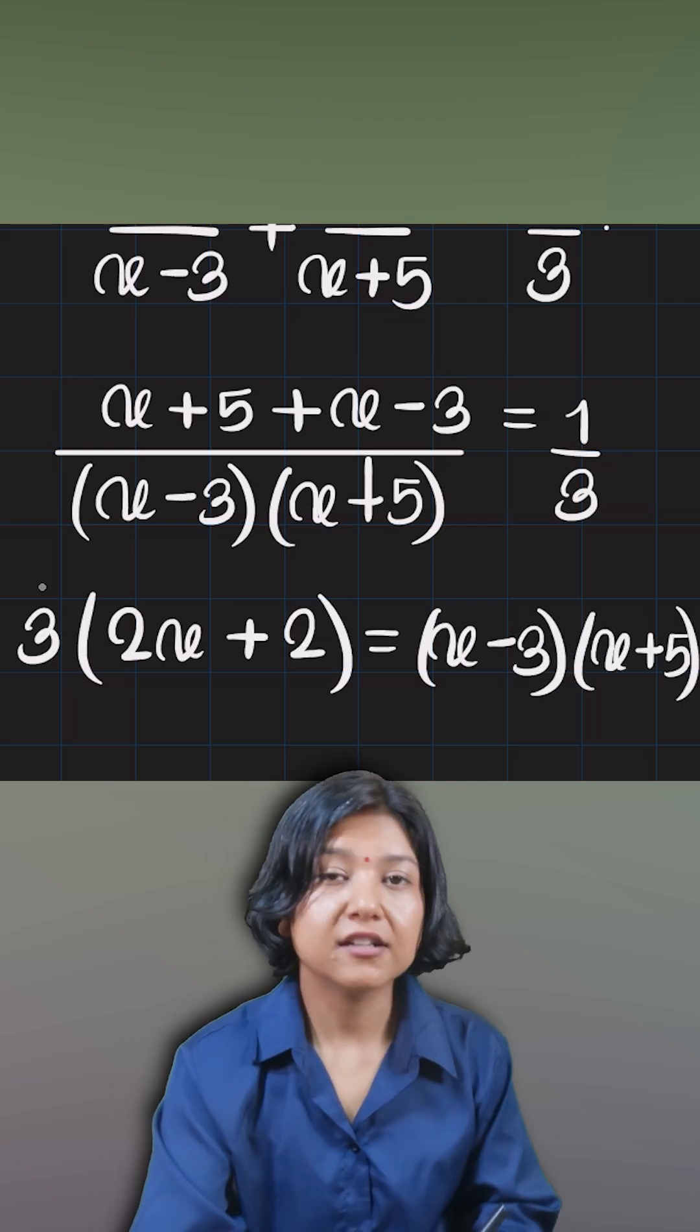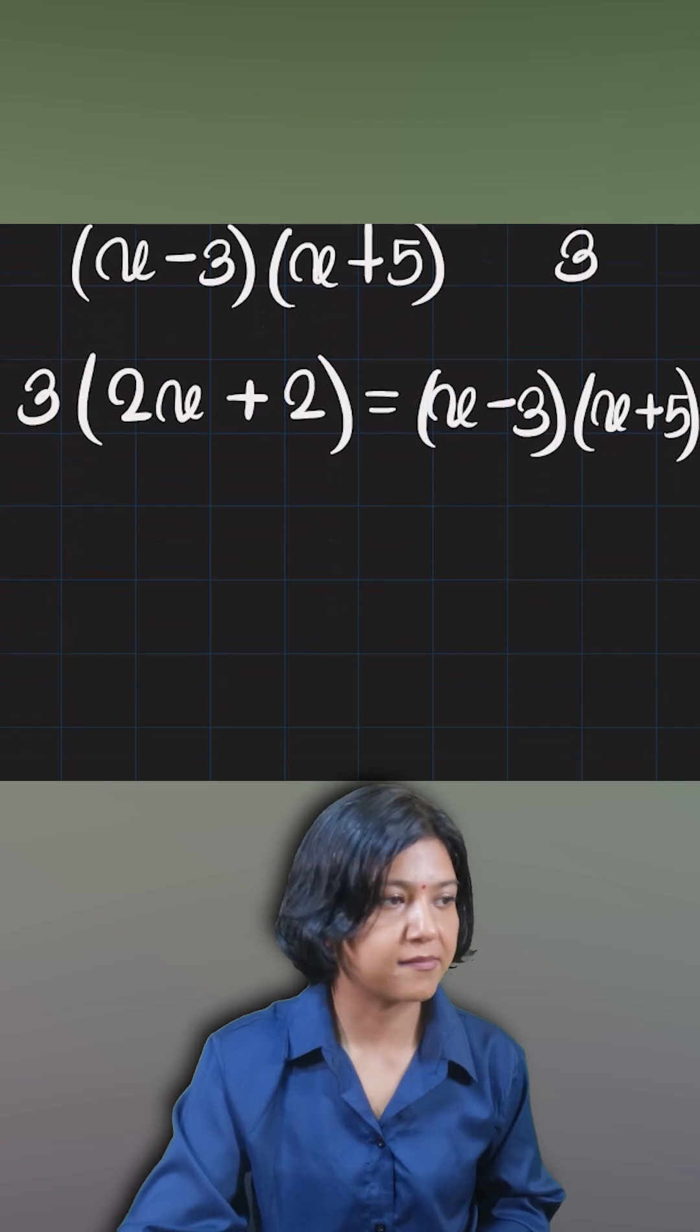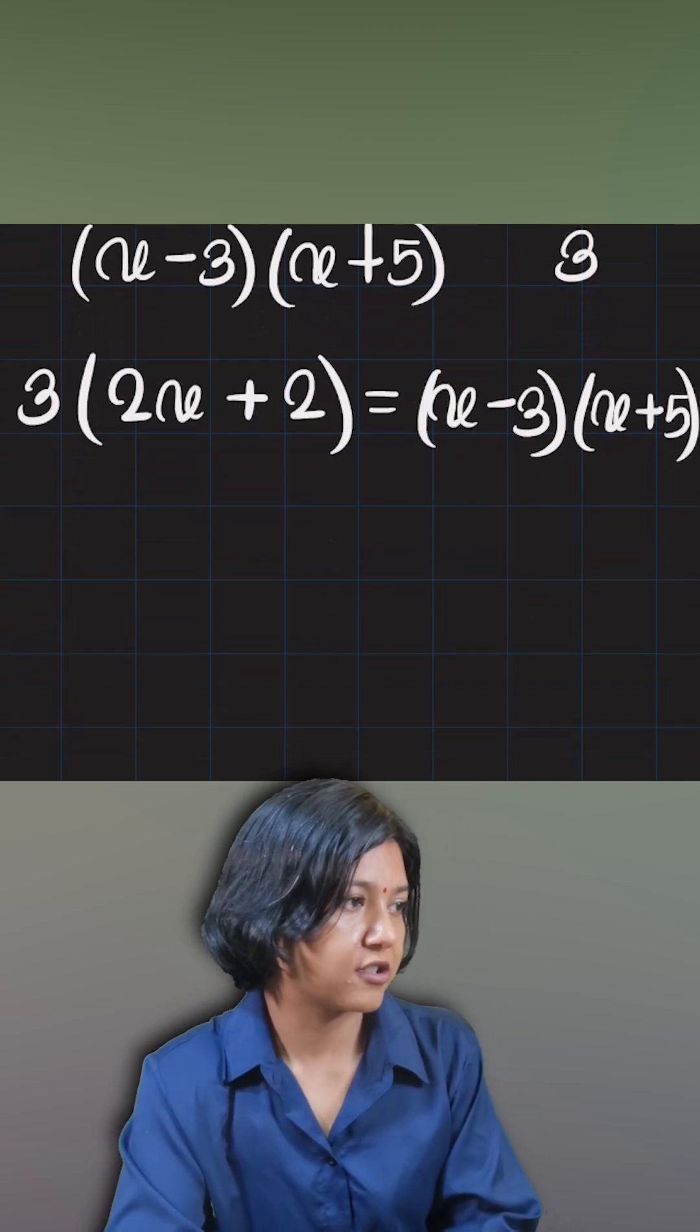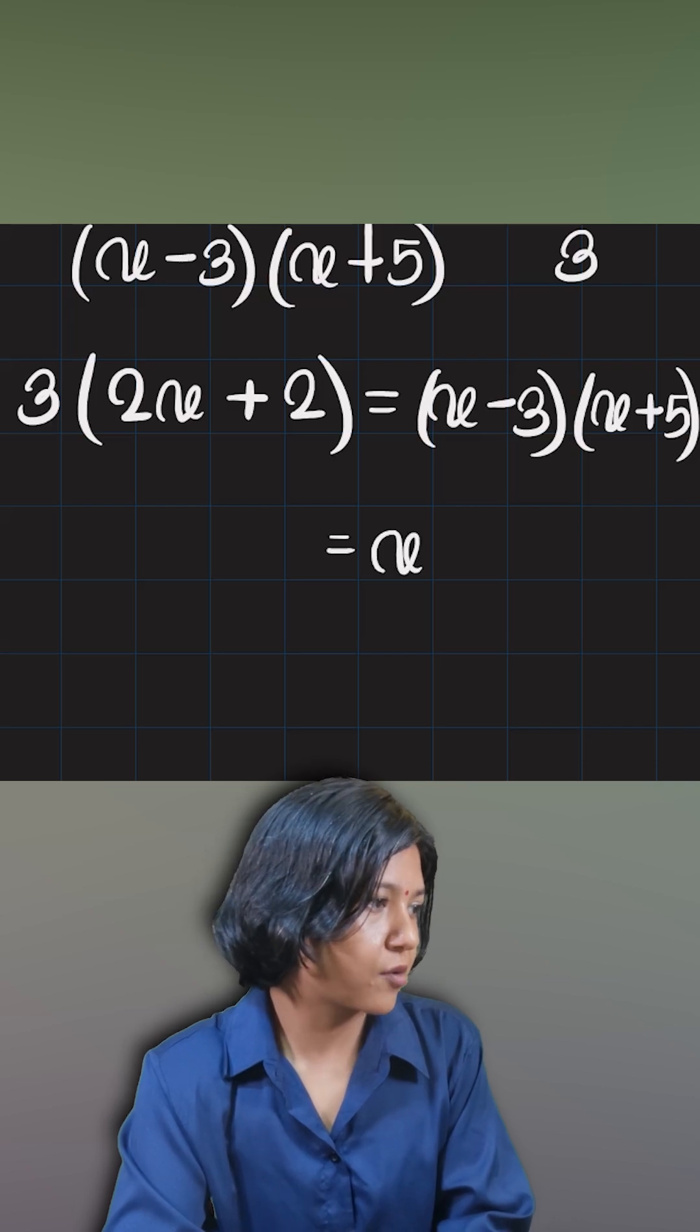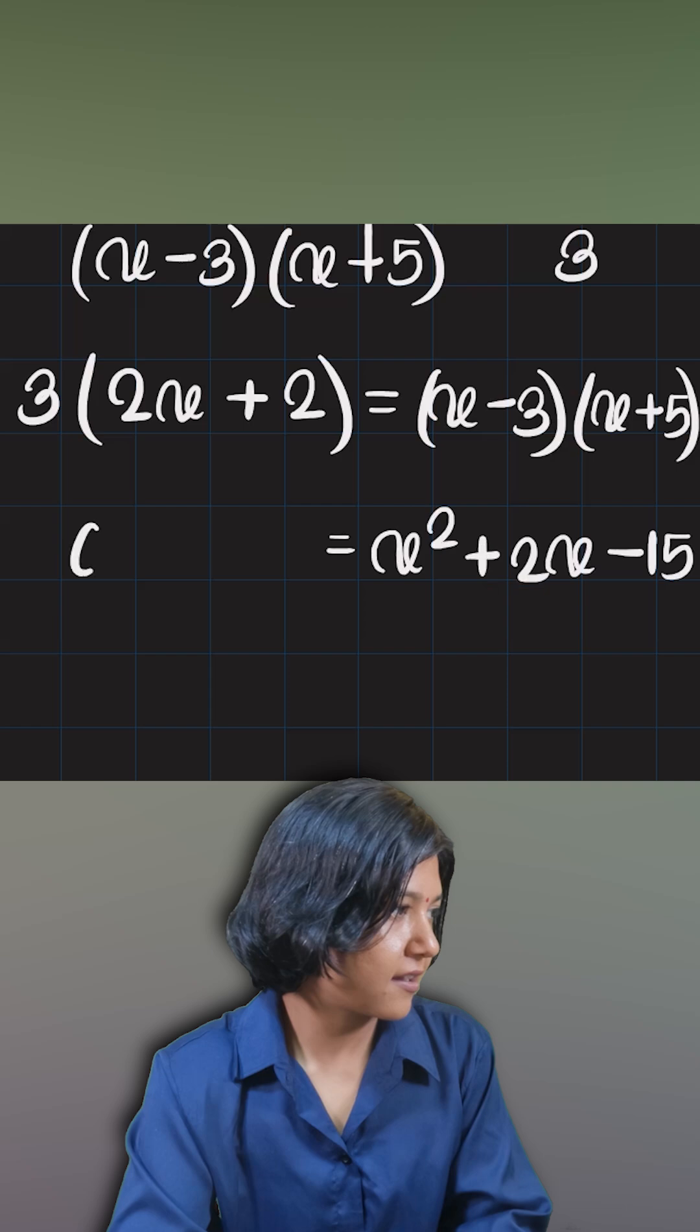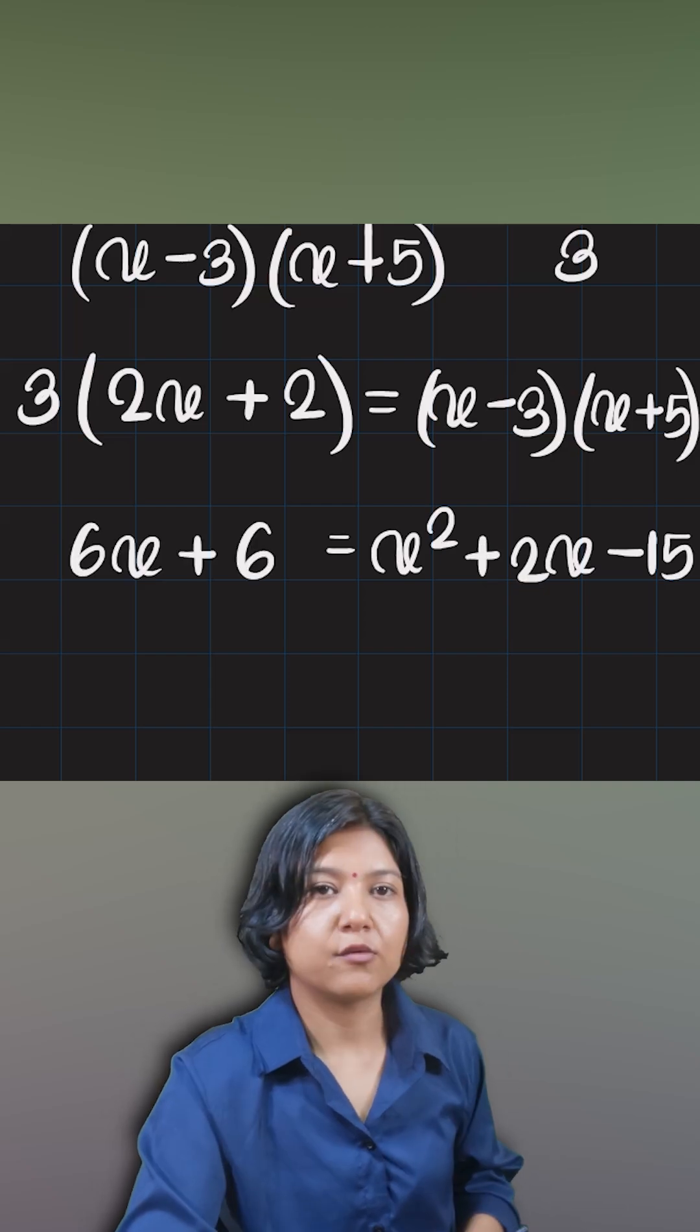Once you get your quadratic, that is when things become very simple and you can simplify everything and bring it on the left or just suit yourself. This side will get x squared plus two x minus fifteen, and this side I get six x plus six.